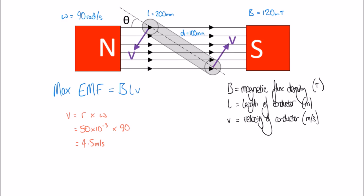Now that we know the velocity in meters per second, we can calculate the maximum EMF: EMF = B × L × V = 120 × 10⁻³ Tesla × 200 × 10⁻³ meters × 4.5 meters per second. That gives an answer of 0.108 volts. So we get a voltage of 0.108 volts produced in each of the armature conductors when they pass that perpendicular point.